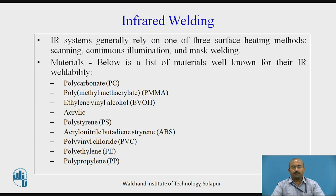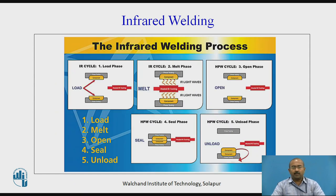Various materials that can be joined include polycarbonate, acrylic, polystyrene, and so on. Let us see the infrared welding process in five steps. The jobs are held in fixtures, and in five steps the joining of two distinct elements is performed. The IR source is placed between the two elements for a few seconds — seen in step two, the melt phase. After a specific period of time, it is removed — step three, the open phase. Then the two elements are pressed together — step four, the seal phase. Finally, the product is offloaded and unloaded in step five.